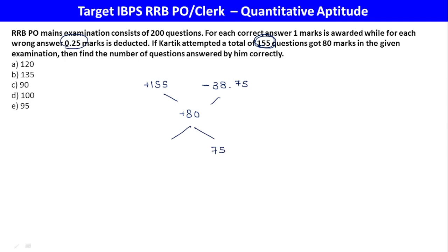Using allegation: 155 questions attempted, 80 marks achieved. Correct gets plus 1, wrong gets minus 0.25, making the average 80/155. The difference from -0.25 to the average is 118.75, and from +1 to average is 38.75. The ratio is 19 to 12. So correct to wrong is 19:12. Total 31 parts equal 155, so correct answers are 19 parts which is 95. Option E is the answer.